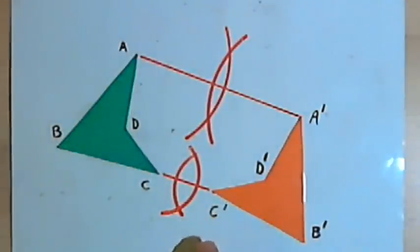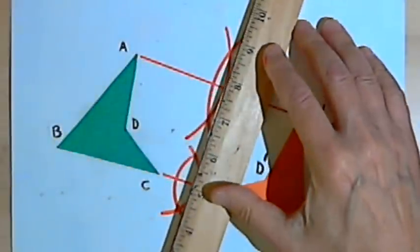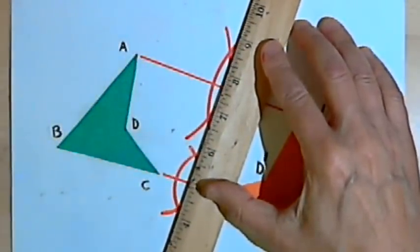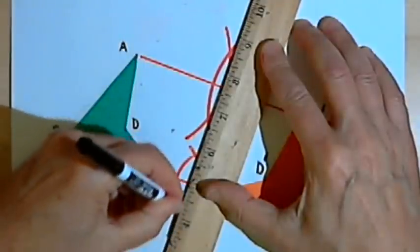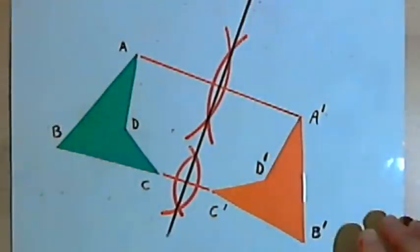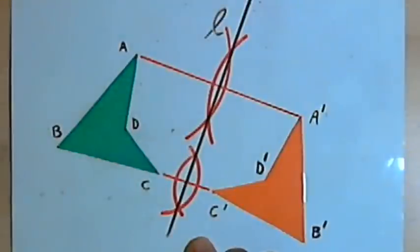And now if I connect the places where each pair of arcs intersected, I'll have both of the perpendicular bisectors. So I'll draw a line through them to the perpendicular bisector. And this perpendicular bisector, I'm going to label that line L. That's the line of reflection.